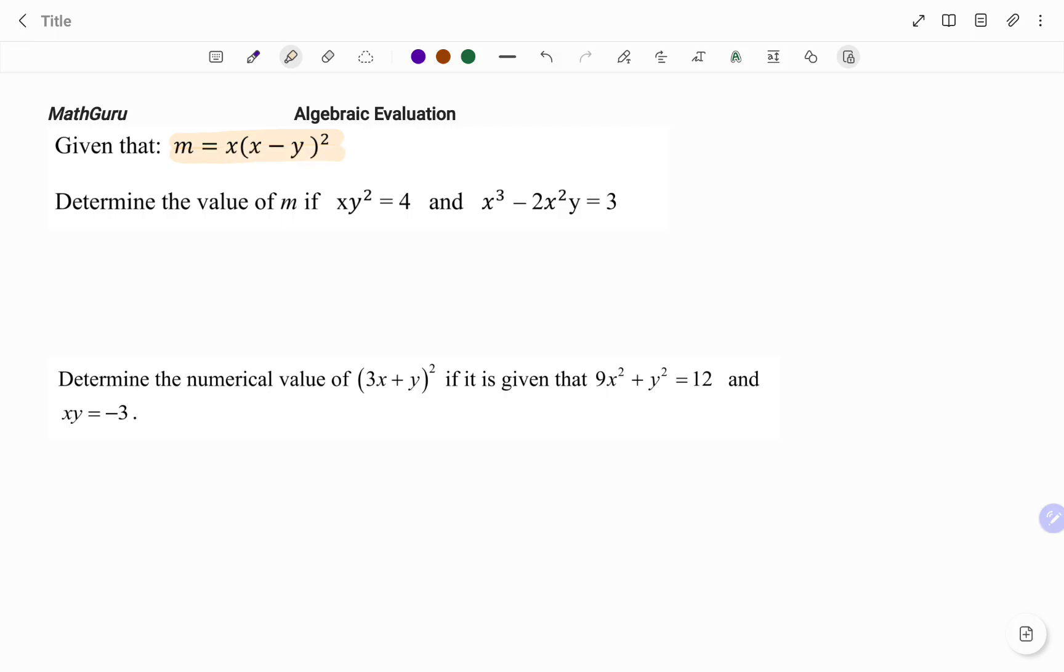We're going to start with the equation which says m equals x times x minus y all squared. Simplifying further, we have x times x minus y times x minus y. If I expand by foiling, I have x in bracket x squared. I have all the terms in the first bracket multiplying all the terms in the second bracket. So therefore, I have x squared minus xy minus xy plus y squared.